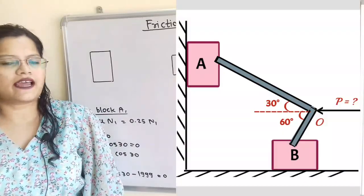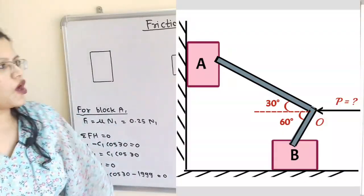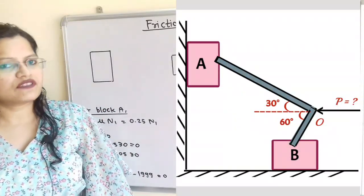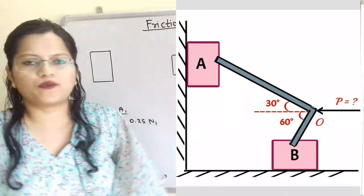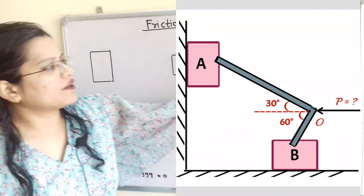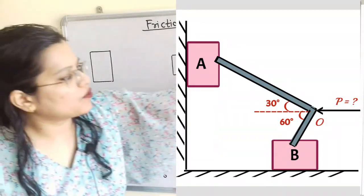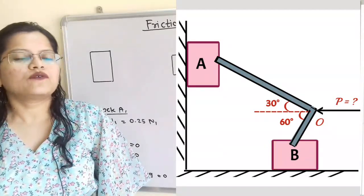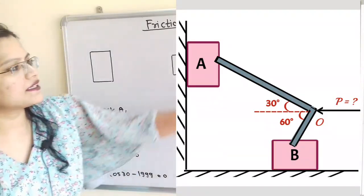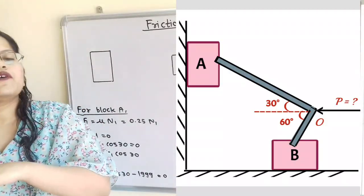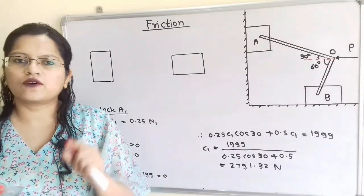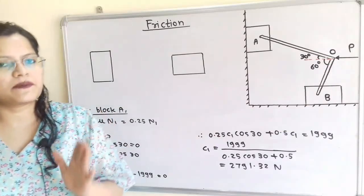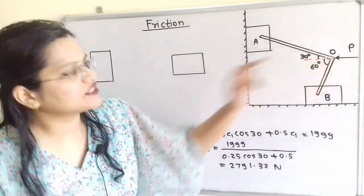Let us understand the given diagram. There are two blocks A and B which are connected with the help of a rigid link. This link AB is hinged at point O. So link AO is connected to block A and link OB is connected to block B. This link is inextensible.